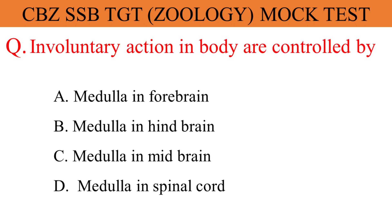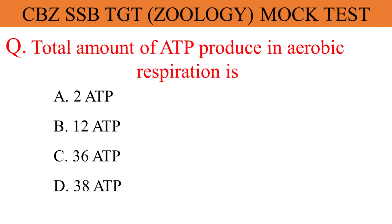Involuntary actions in the body are controlled by: The given options are A. Medulla in forebrain, B. Medulla in hindbrain, C. Medulla in midbrain, D. Medulla in spinal cord. And the correct answer is option B. Medulla in hindbrain.